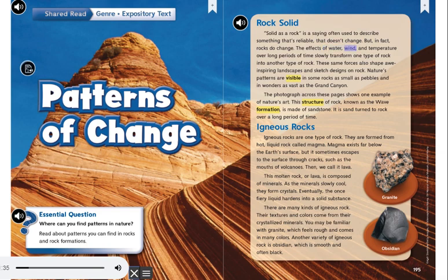The effects of water, wind, and temperature over long periods of time slowly transform one type of rock into another. These same forces also shape awe-inspiring landscapes and sketch designs on rock. Nature's patterns are visible in some rocks, as small as pebbles and in wonders as vast as the Grand Canyon.